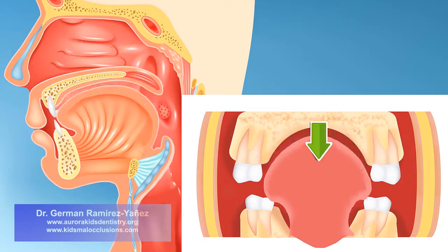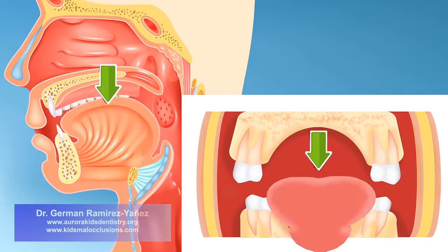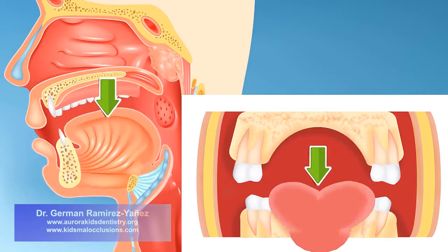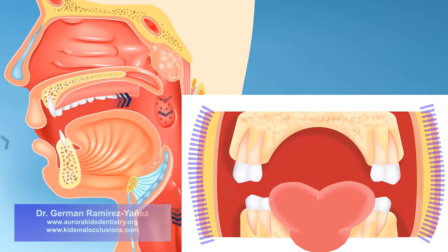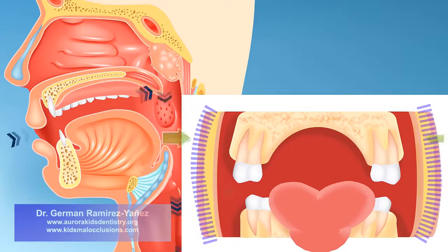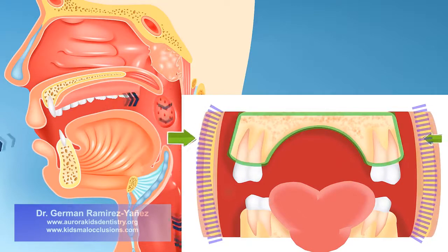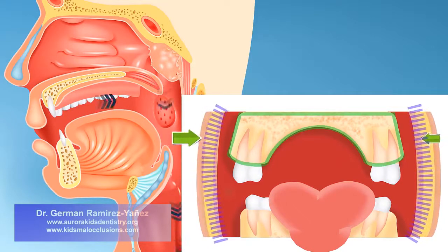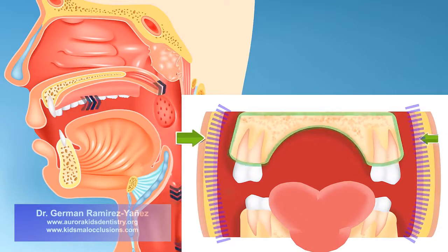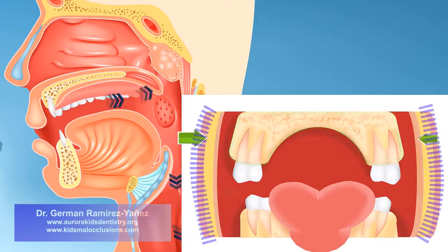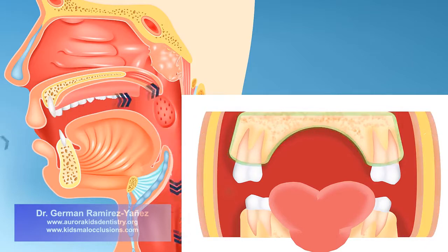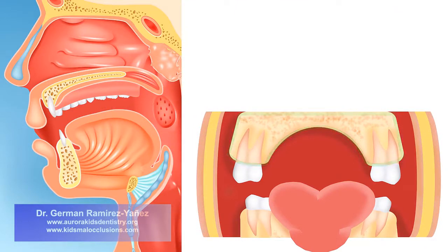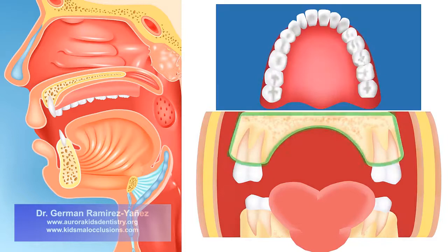Conversely, when you breathe through your mouth, your tongue has to descend and protrude. At the same time, the pressure of your cheeks increases, pushing the upper jaw inwards, so the growth and development of your upper jaw is negatively affected, resulting in a narrow and high palate.